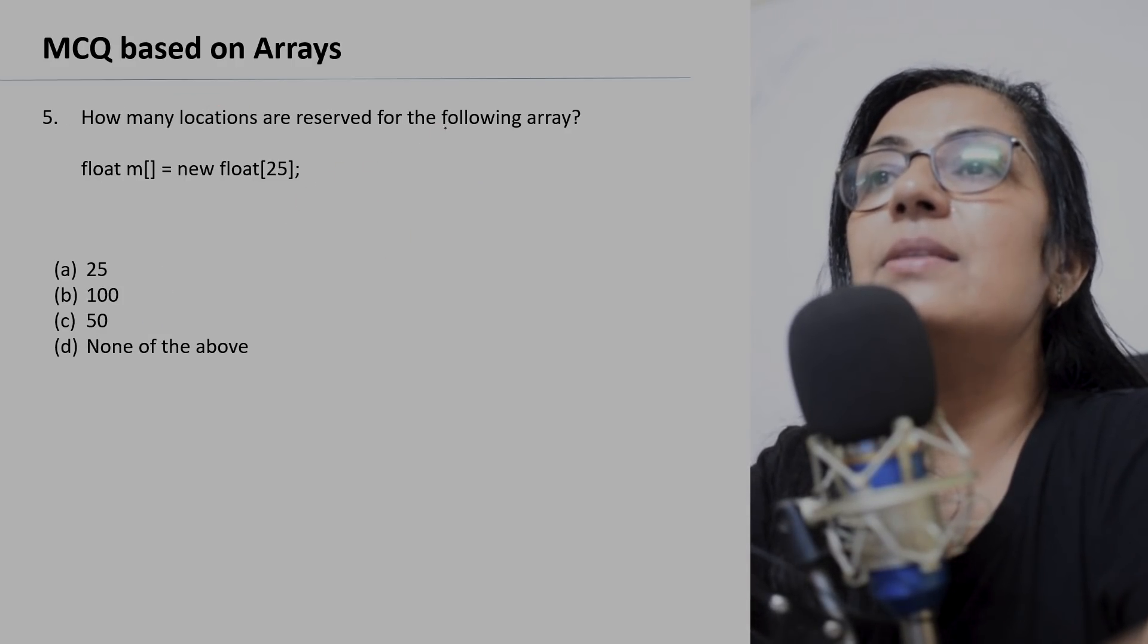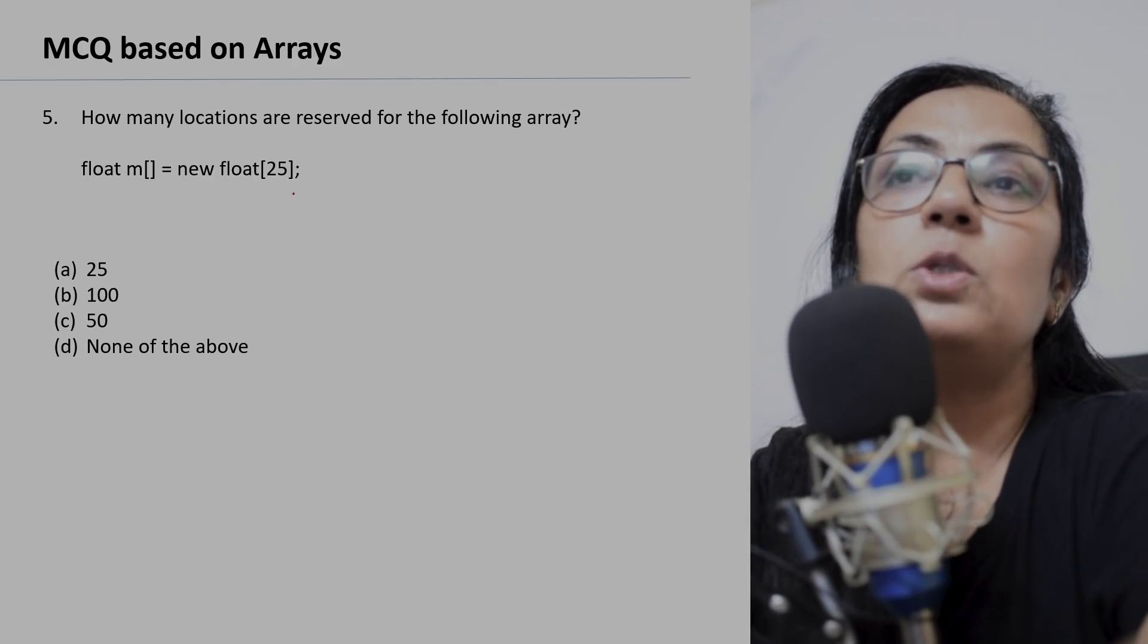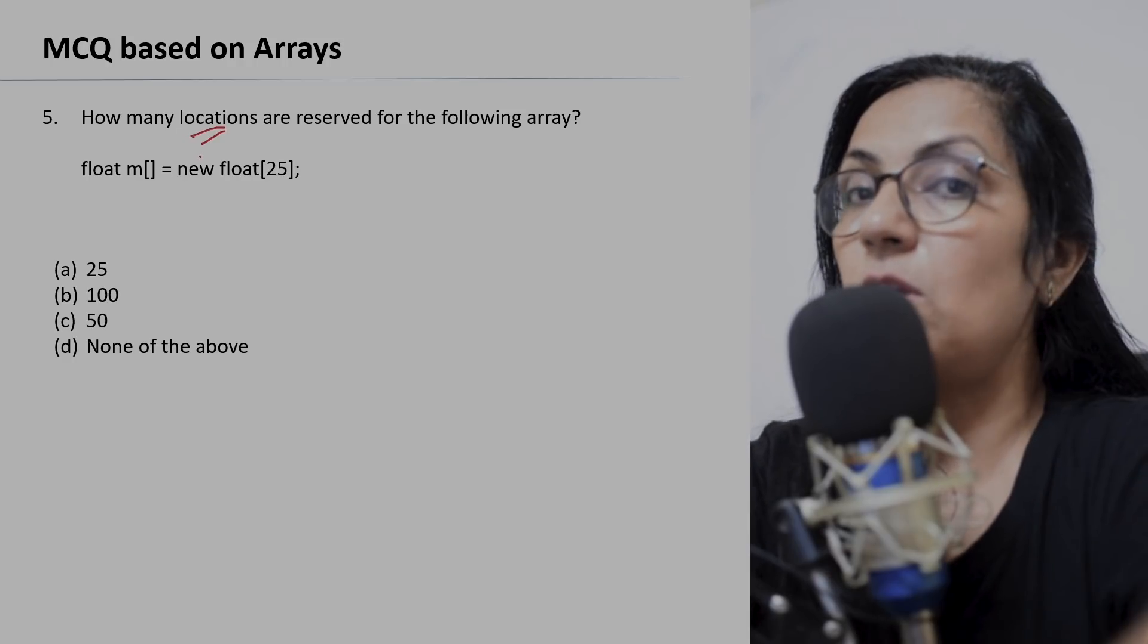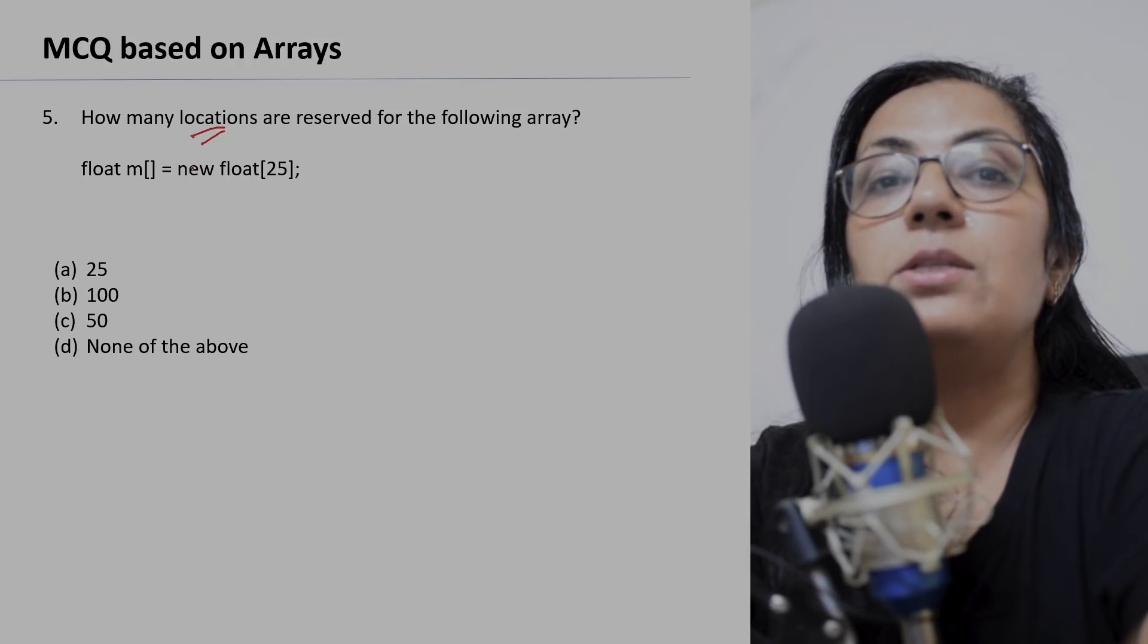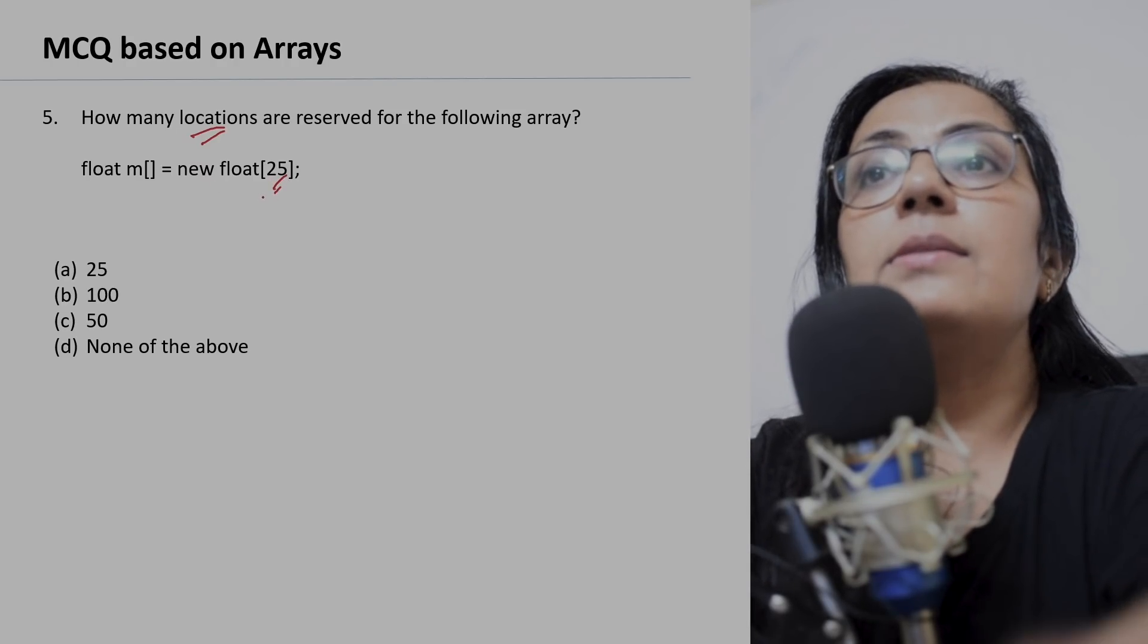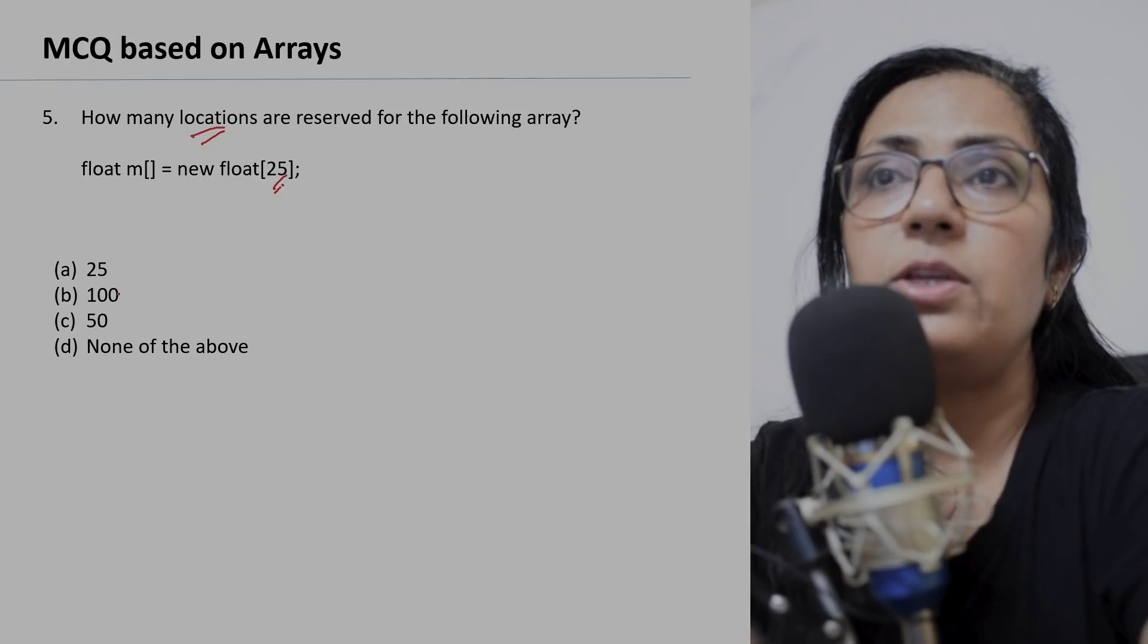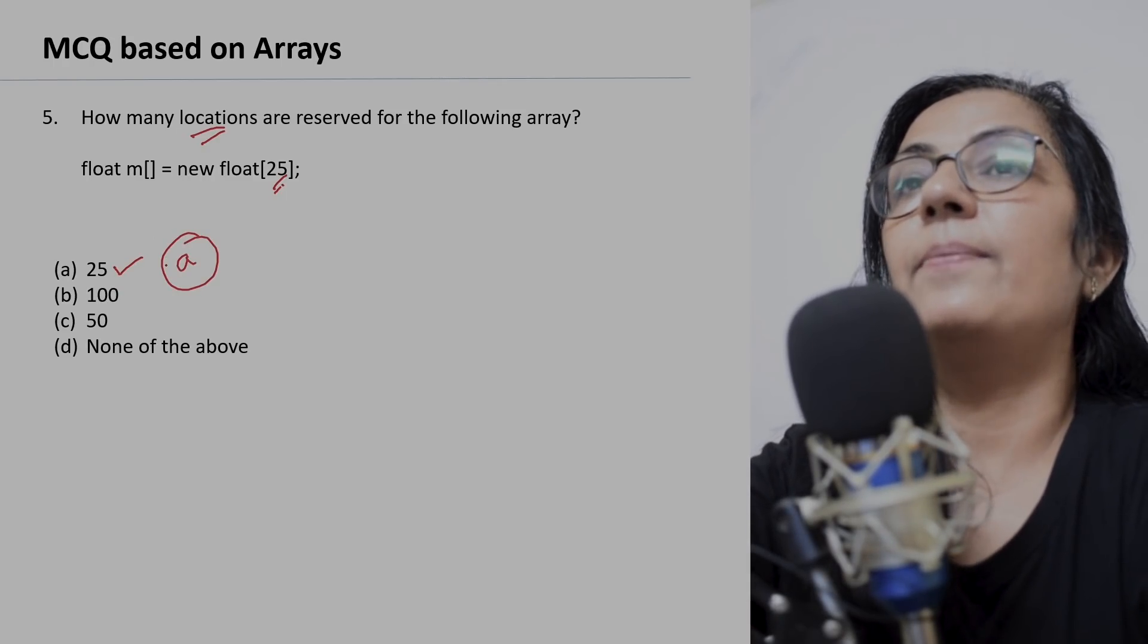We move on to the next question: how many locations are reserved for the following array? float m[] = new float[25]. Children, here please read the question carefully - how many locations? It is not asking what is the size or how many bytes are stored, it is asking how many locations. When it is array and this array will store total 25 elements, so how many locations? 25 only. So children, option A is the correct answer.